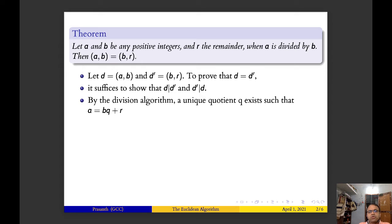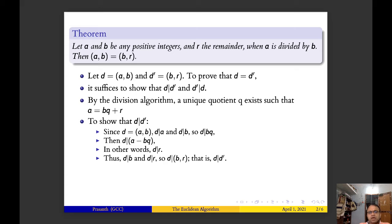By the division algorithm we can find a unique quotient q such that a equals bq plus r. We first show that d divides d'. Since d divides a,b, d divides a and d divides b, so d will divide bq. Therefore d will divide a minus bq. Since a equals bq plus r, d will divide r.